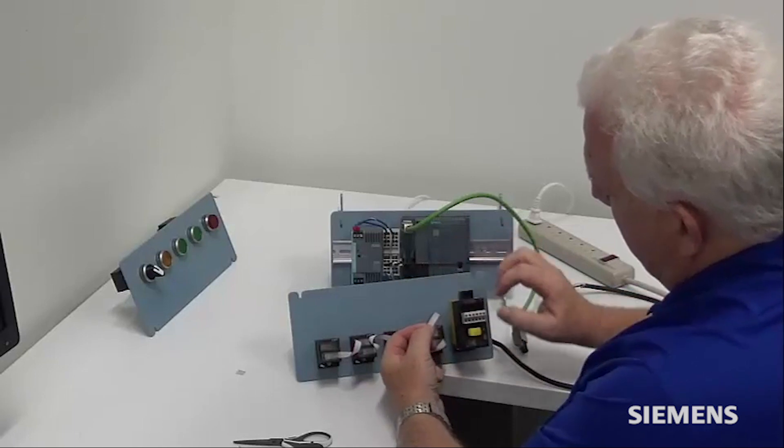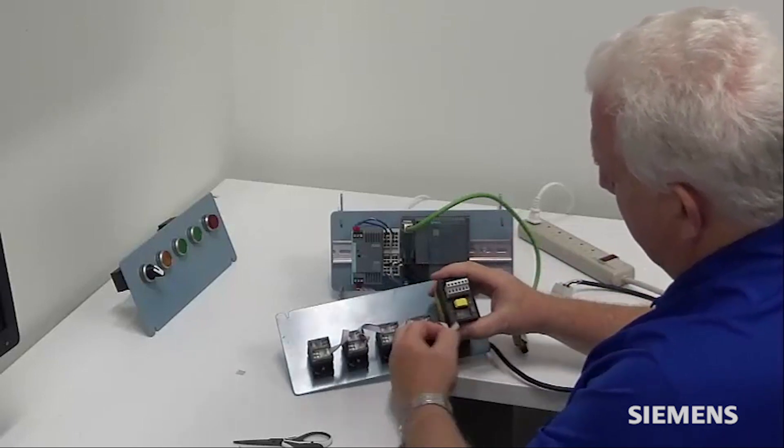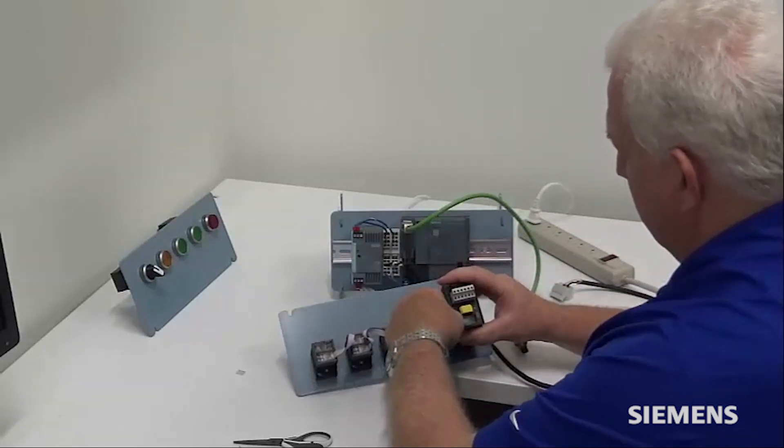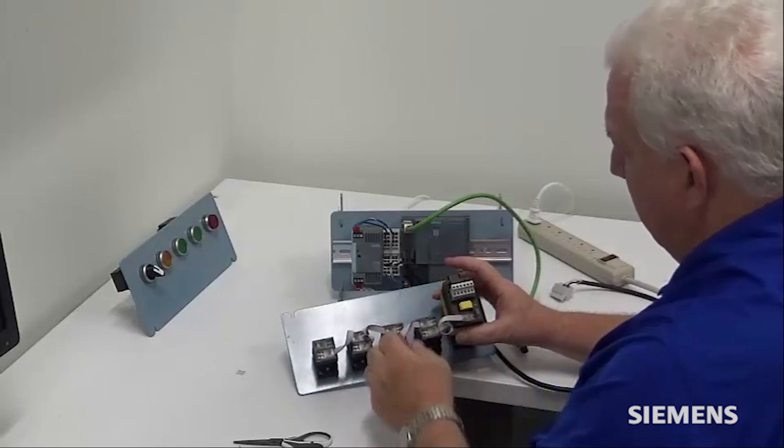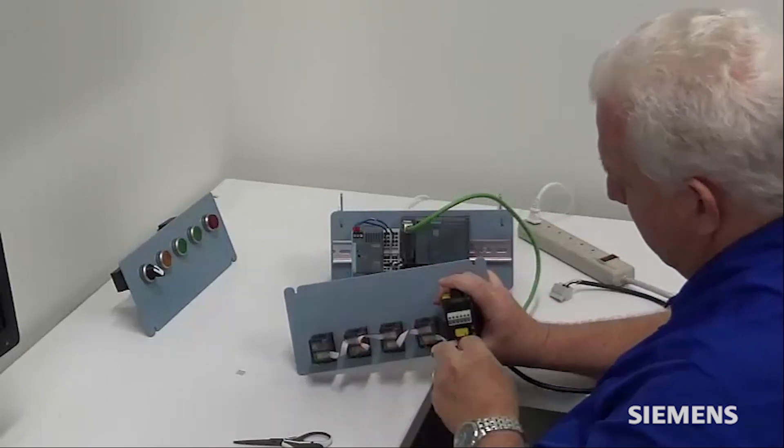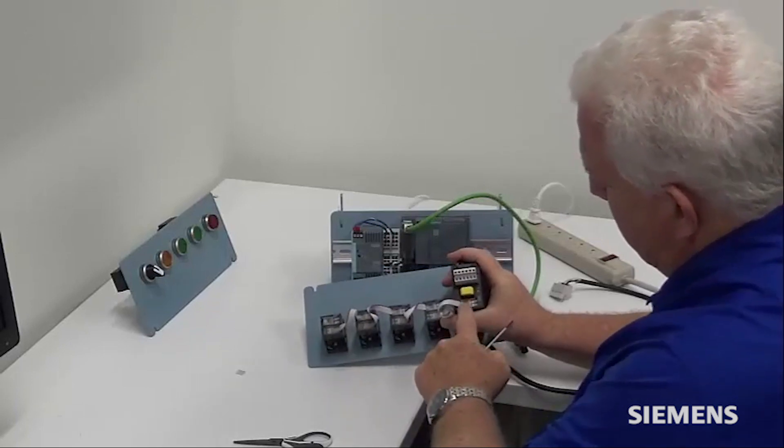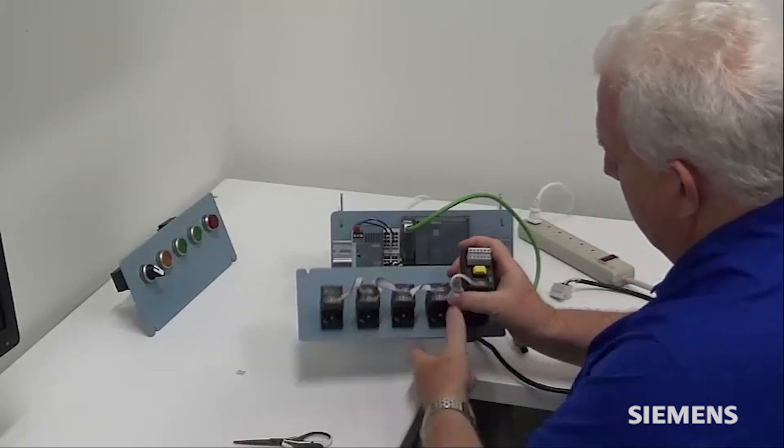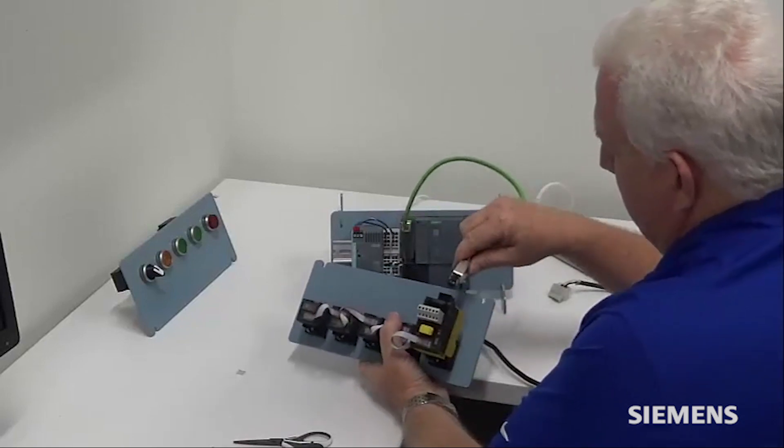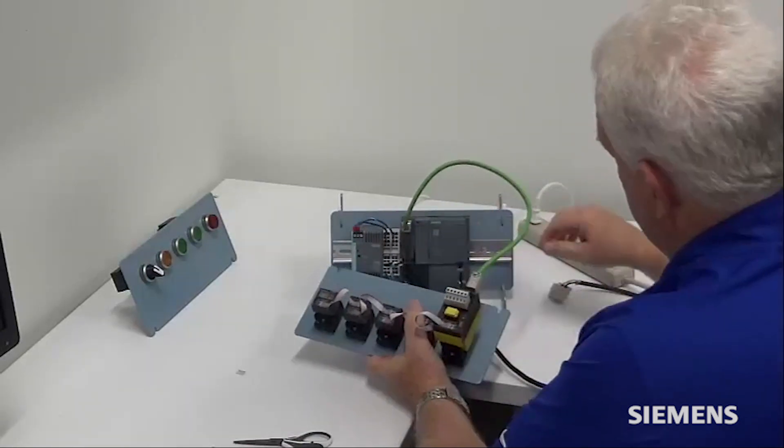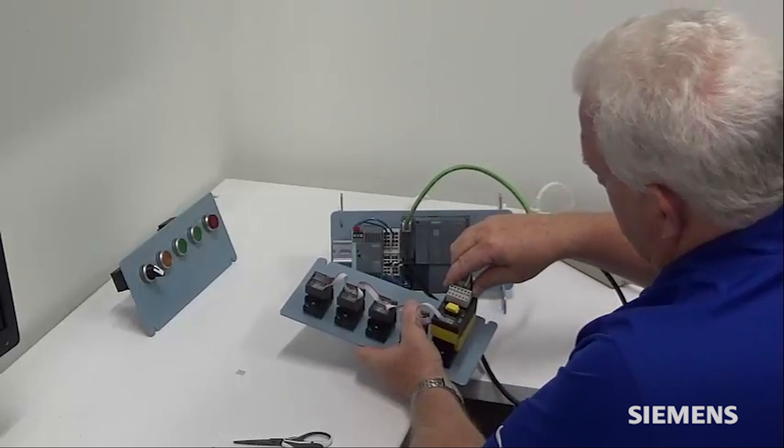Again, align the red line of the ribbon cable with the dot on the interface module. Make sure that ribbon cable is slid all the way in for the connection. Use your screwdriver to then press and close that connection down nice and tight. And then bring back in your Ethernet cable connection and then your 24 volt power connection.